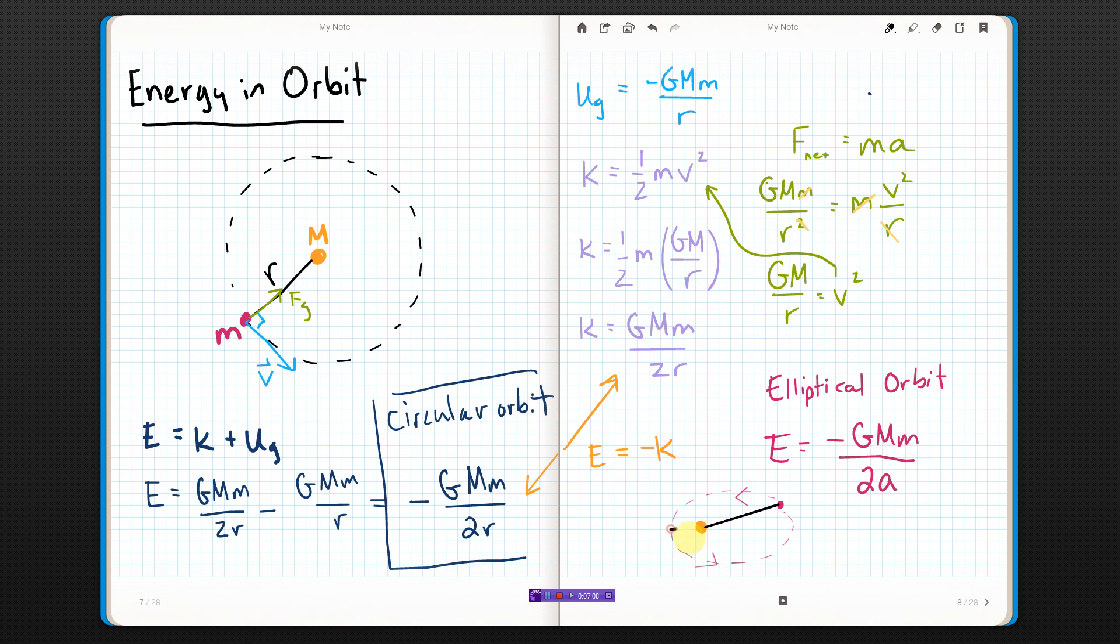When it's over here, the potential energy is less because you're closer together, which means the kinetic energy would be more. So here again, we have that idea that the further away you are, the slower you're moving, and the closer you are, the faster you're moving. But, at either place, here or here, when you add up U plus K, you get the same number. You get this number.